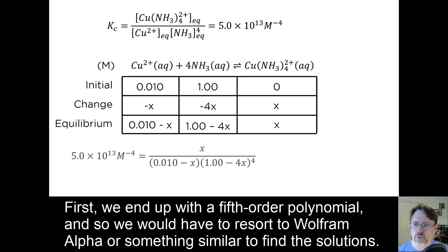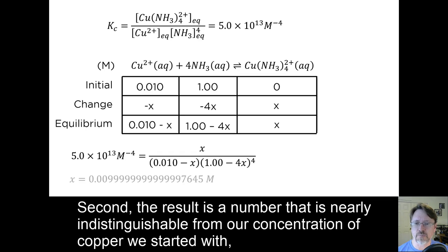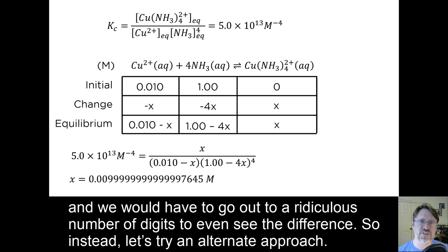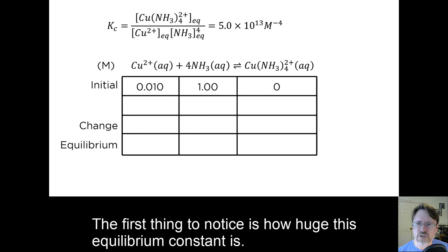we end up with a fifth-order polynomial, and so we would have to resort to Wolfram Alpha or something similar to find the solutions. Second, the result is a number that is nearly indistinguishable from our concentration of copper that we started with. And we would have to go out to a ridiculous number of digits to even see the difference. So instead, let's try an alternate approach.